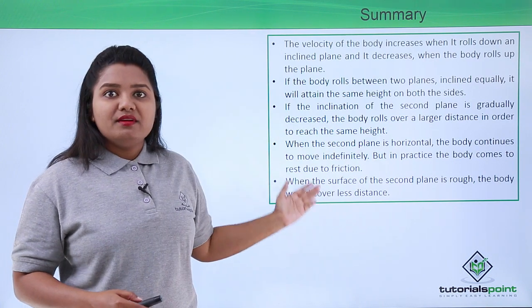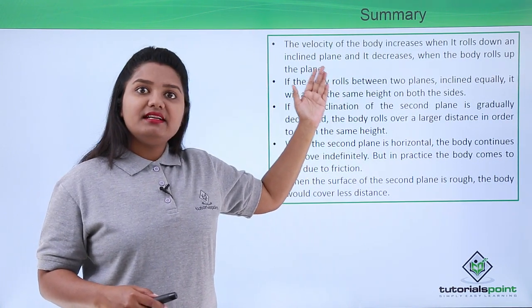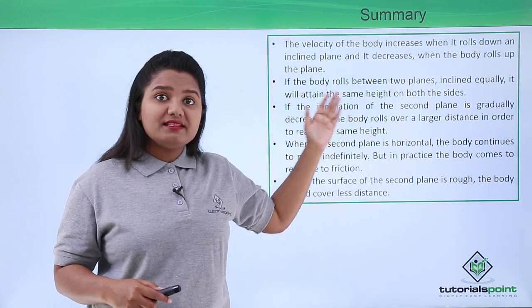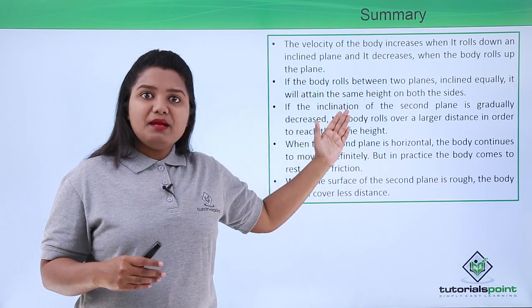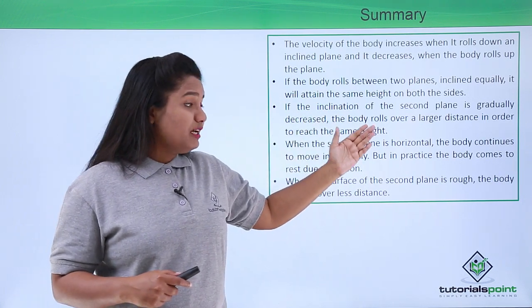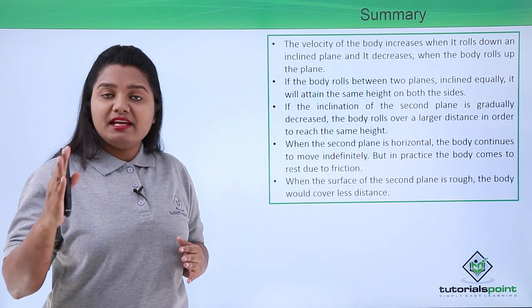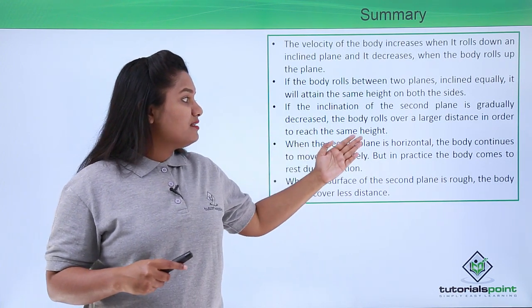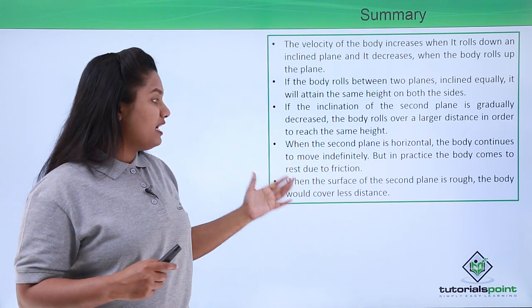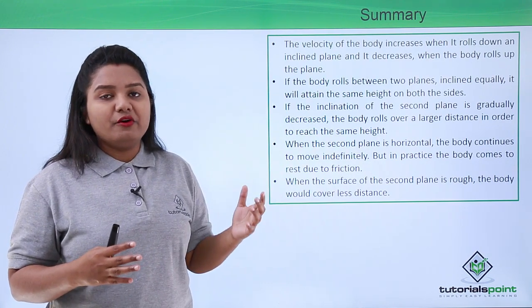In this video we have learned that the velocity of a body increases when it rolls down an inclined plane and decreases when it rolls up. If the body rolls between two equally inclined planes, it will attain the same height on both sides. If the inclination of the second plane is gradually decreased, the body rolls over a larger distance in an attempt to reach the same height. When the second plane is made horizontal, the body continues to move indefinitely, but in practice it comes to rest because of forces like friction.